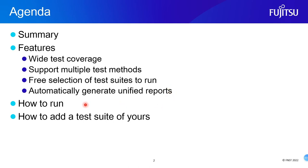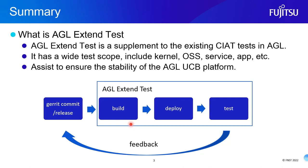After that, let's take a look at the overall description of what Agile Extended Test is. Agile Extended Test is a supplement to the existing CRIT test in Agile. It has a wide test scope, including kernel, OSS, service, app, etc. It assists to ensure the stability of the Agile UCB platform.